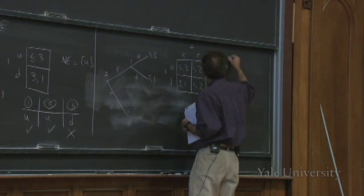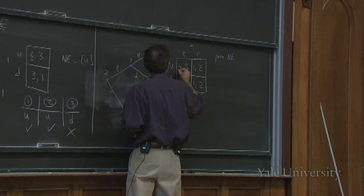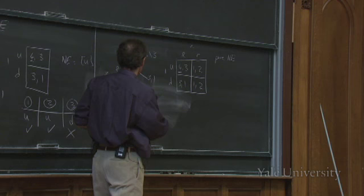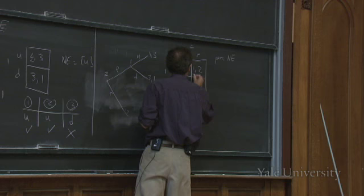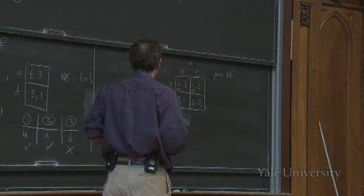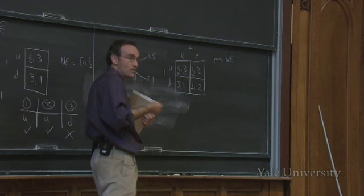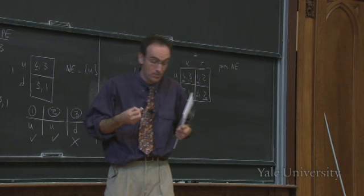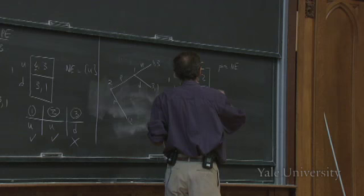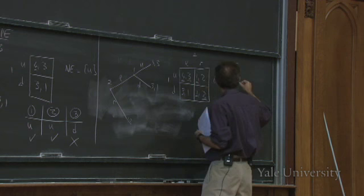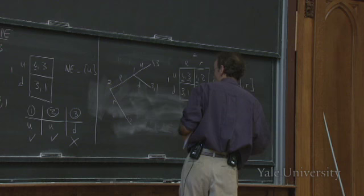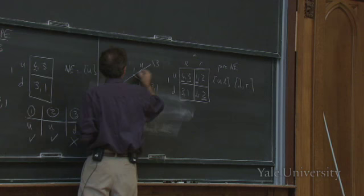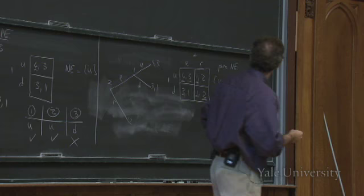Looking for pure Nash equilibria in this sub-game: if two chose left, one wants to choose up. If two chooses right, it doesn't really matter what one chooses since she isn't going to get to move anyway. If one chooses up, two wants to choose left — that's the example of one not screwing up. But if one was going to choose down, player two would like to get out. So there are two equilibria: up-left and down-right.